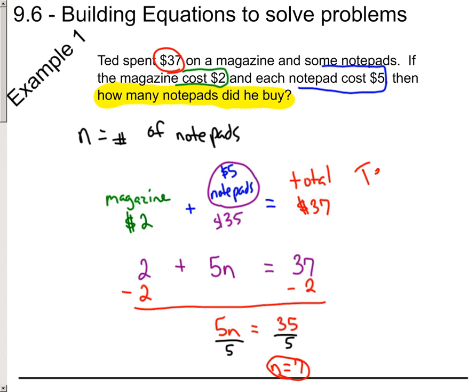And we just need to restate our question. Hey, Ted bought seven notepads. So it's this idea of trying to piece together the information with how it would fit to usually a total. You know, we had $37 total. $2 of it was a magazine, and we need to add that to something going on with our notepads. And we knew it was $5 each, but we didn't know the number of them. But if we multiplied $5 for each notepad, five times the number of notepads, that would get us a total cost of $35 here, and that would add up to $37. And when we went and solved, sure enough, we got the right answer of seven notepads.